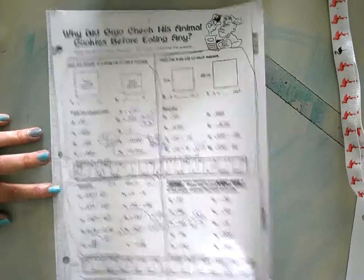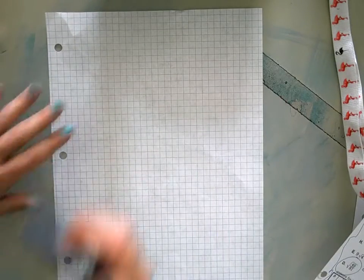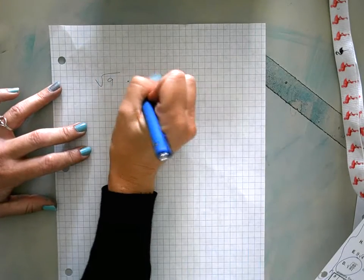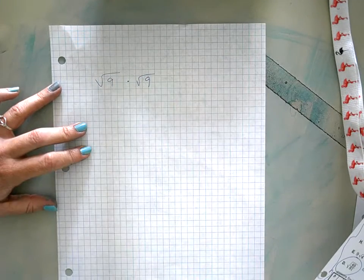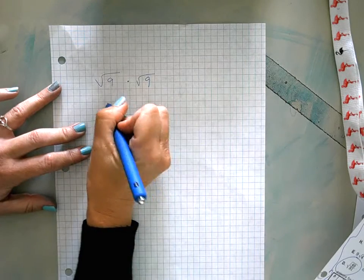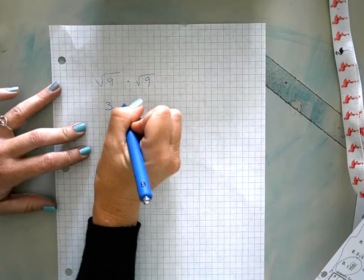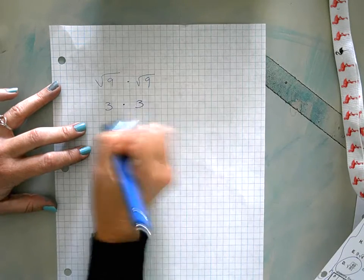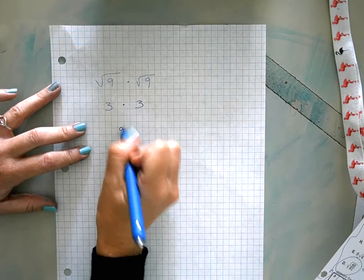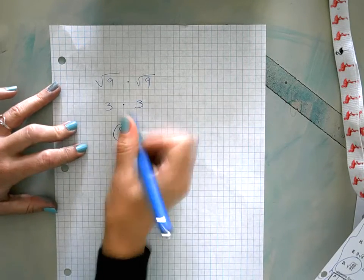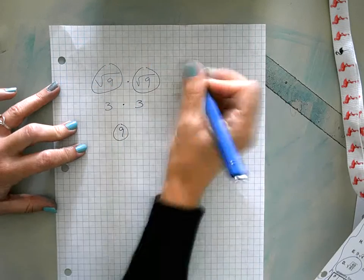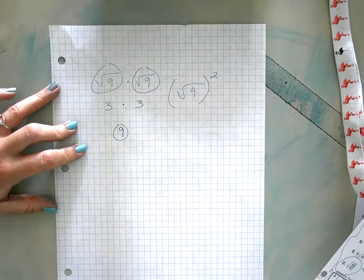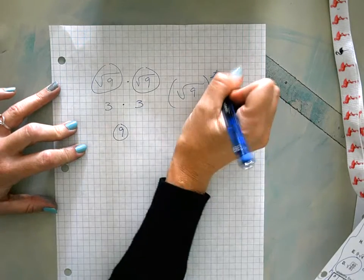I want to look at a similar problem. So let's take a problem that we know, like the square root of 9 times the square root of 9. The square root of 9 is 3, and the square root of 9 is 3, and 3 times 3 is 9. If you square a square root, since those are opposite operations, they actually cancel each other out.